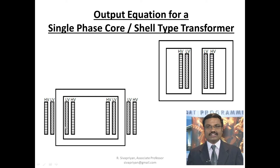In a core type transformer, the winding is placed on the limb. The primary (LV) winding is divided into two parts — half on one limb and half on the other limb. Similarly, the HV winding is also split: half on each limb. In the shell type transformer, the winding is placed on the center limb — the entire LV and HV windings are placed there, either in cylindrical or sandwich pattern. This figure shows the cross-sectional view of the single-phase core type and shell type transformers.